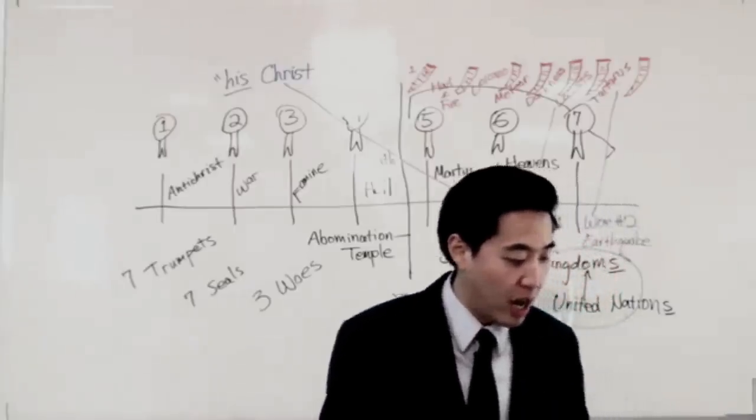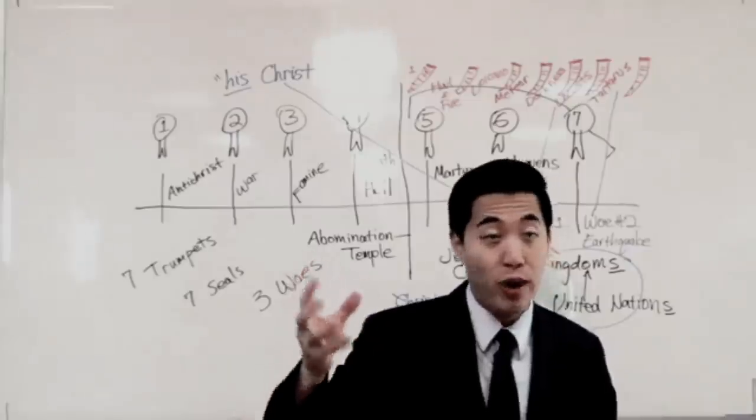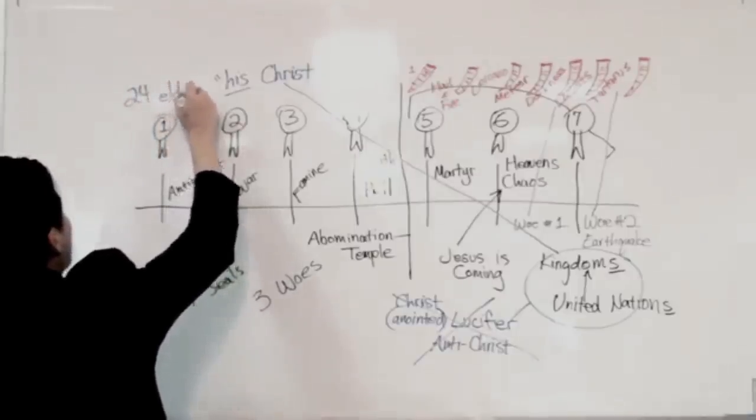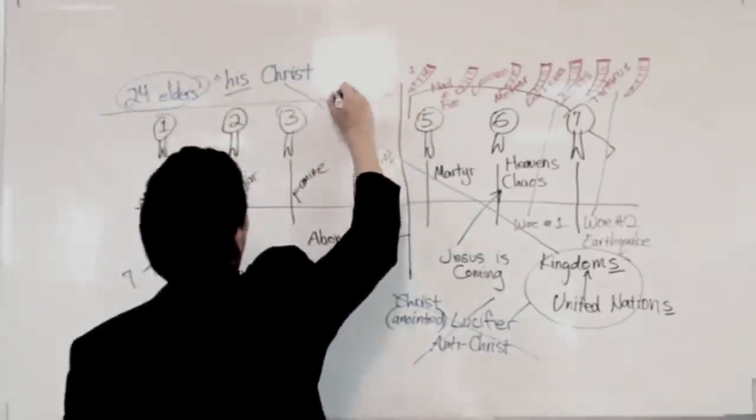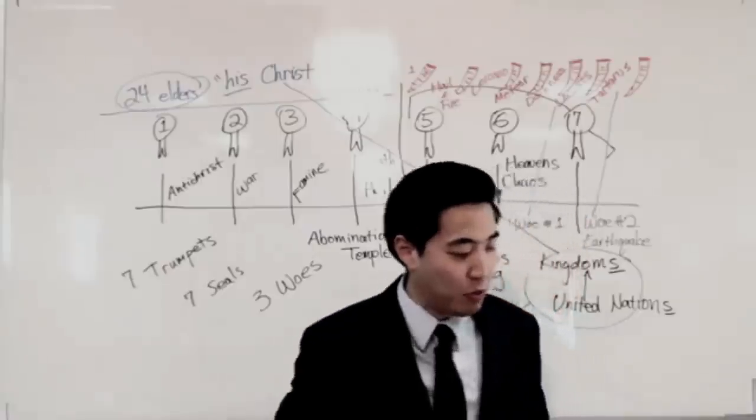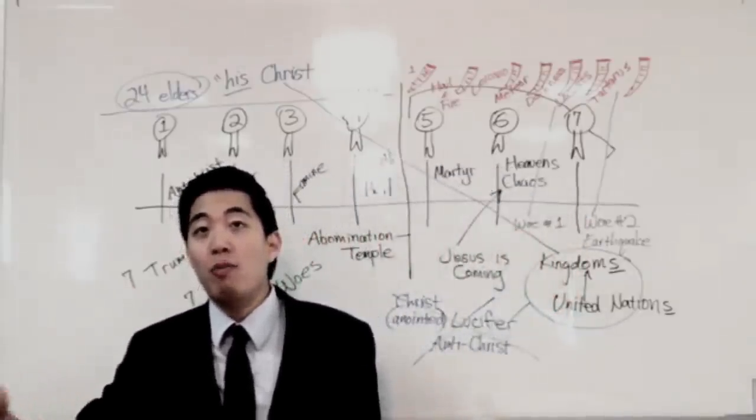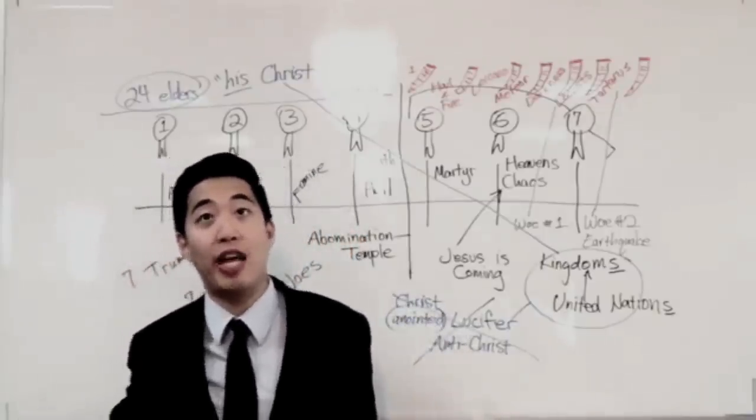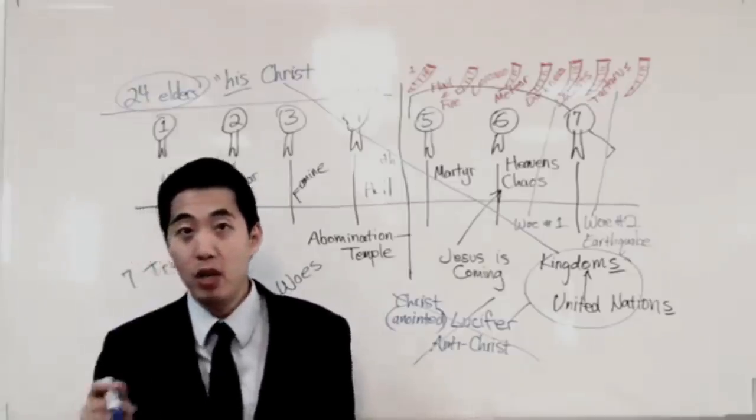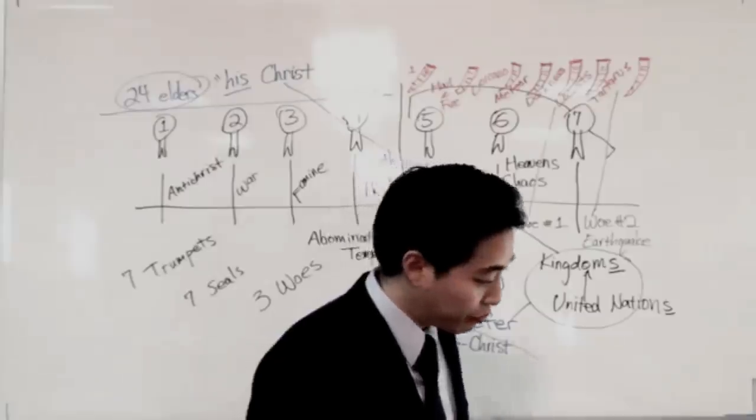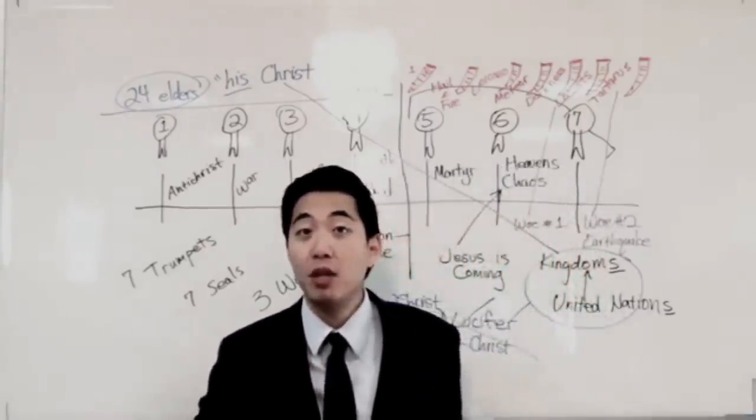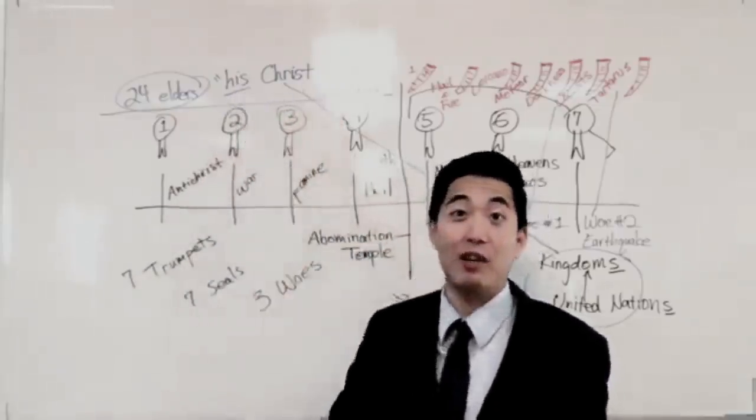Alright. Let's read verse 16. And the four and twenty elders. So notice, remember the twenty-four elders up in heaven? So that's us. Notice that we're up in heaven, the twenty-four elders. And what are we doing up in heaven? Which sat before God on their seats, right? So we have our own seats, remember? Remember Revelation 2 and 3 and Revelation 5 and Revelation 1, that God gave a promise that the twenty-four elders or His church would have a seat to rule with Him. So here we are. We have our own seats to rule with Jesus Christ. Fell upon their faces. Notice we bow down before God and worship God. Obviously, where you worship God.